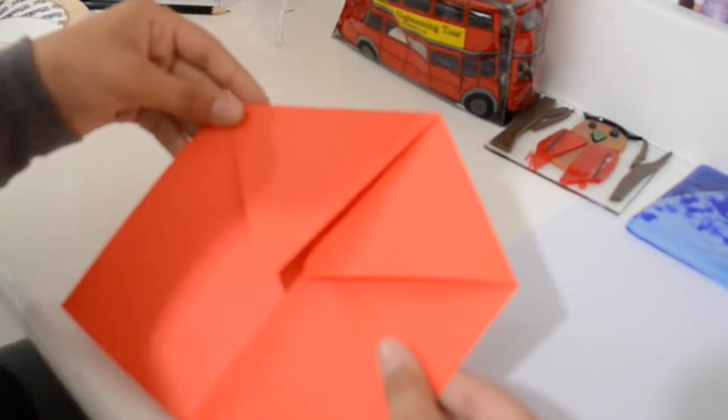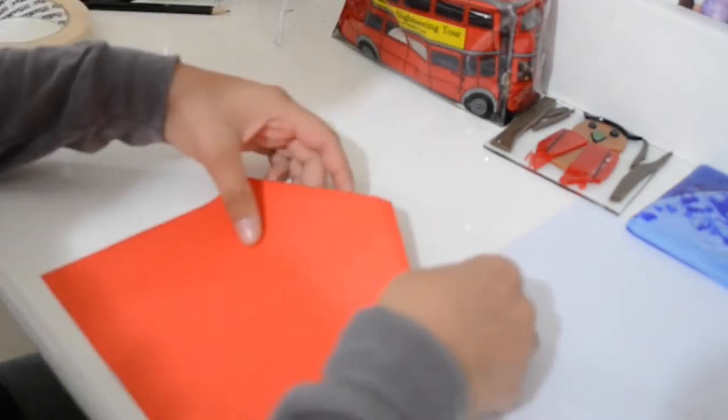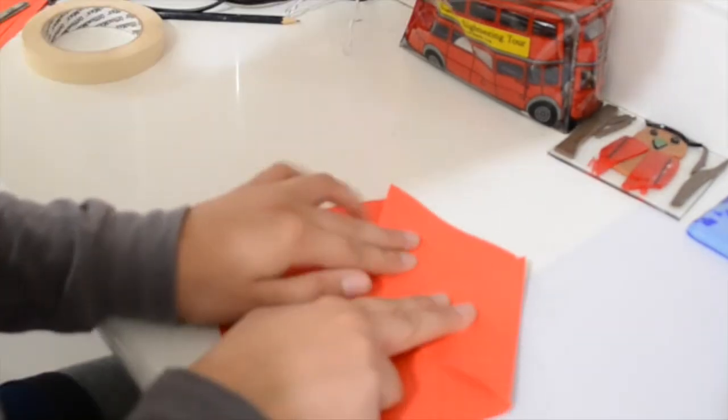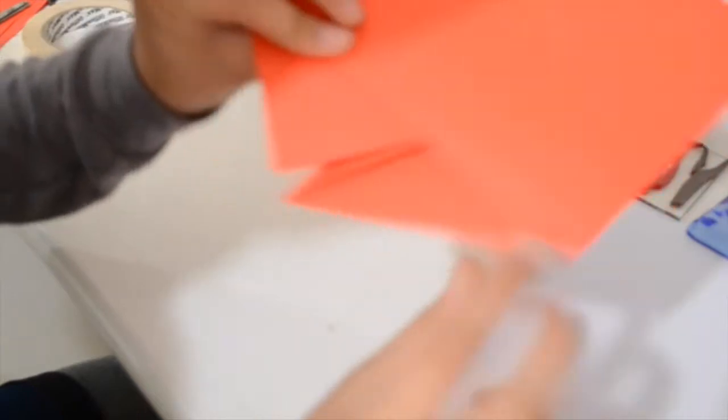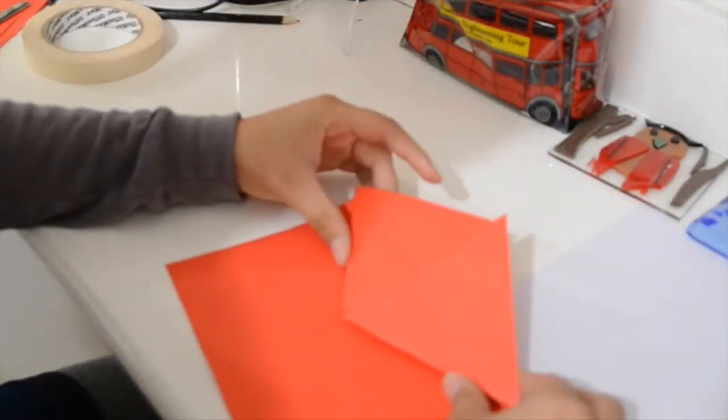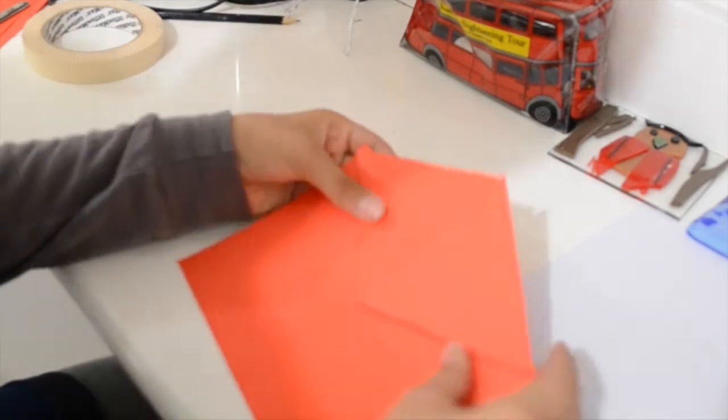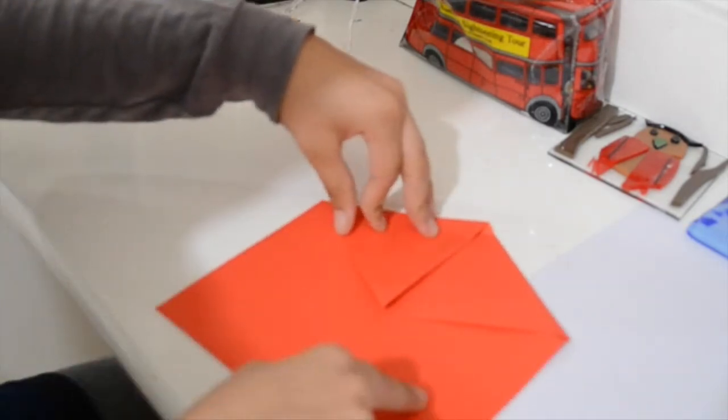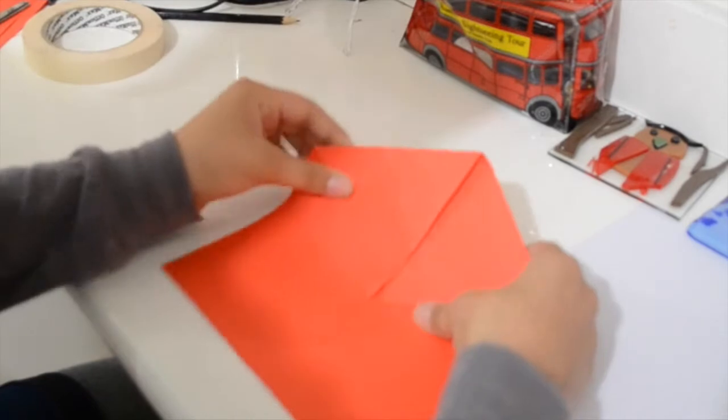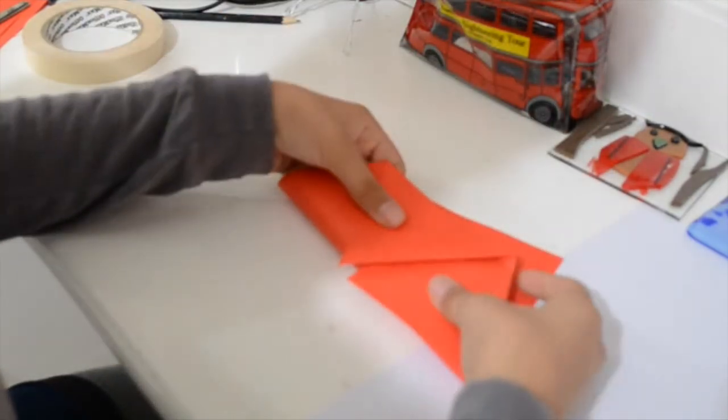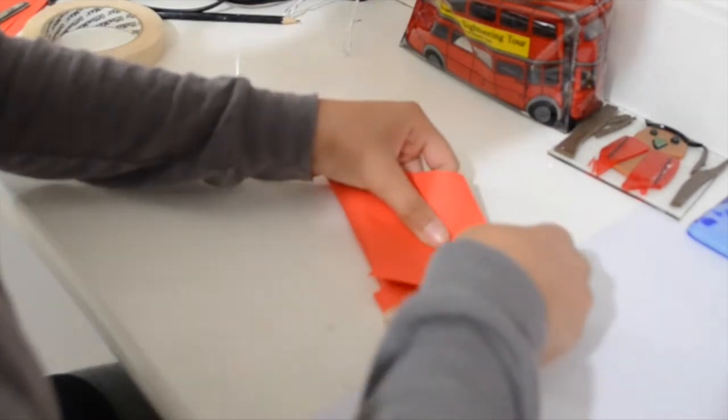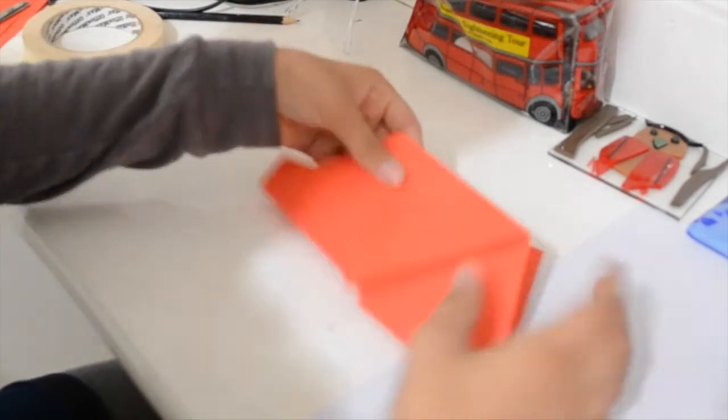Once you have that, we're going to flip it over. And then we're going to make lines down like this. Like that. Straighten this one out. And we're going to do the same on the other side.